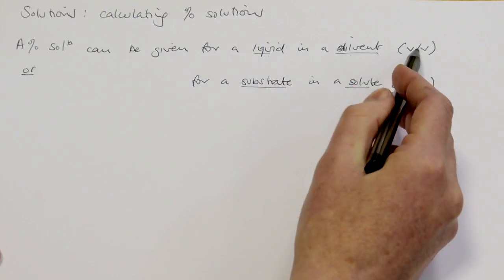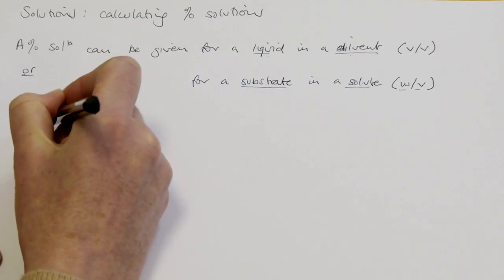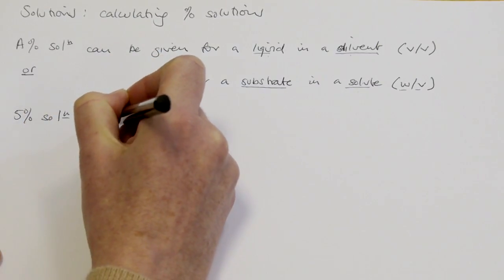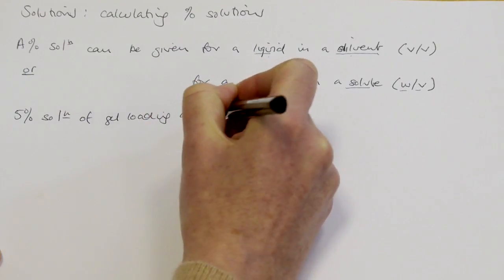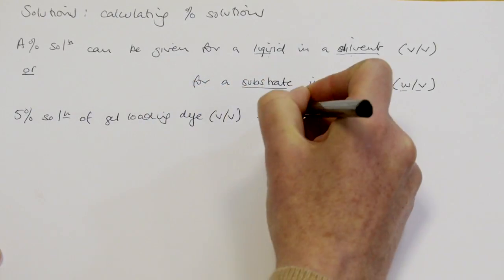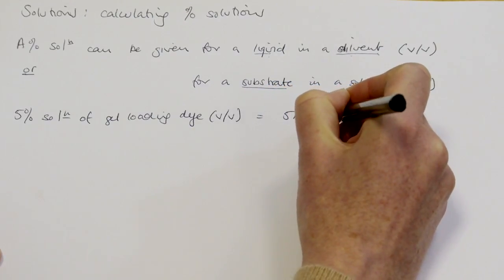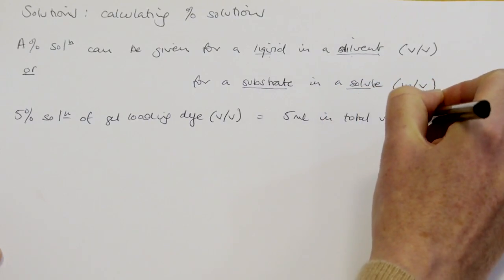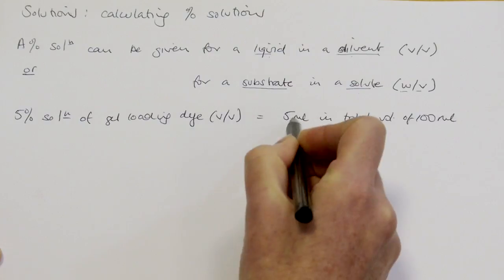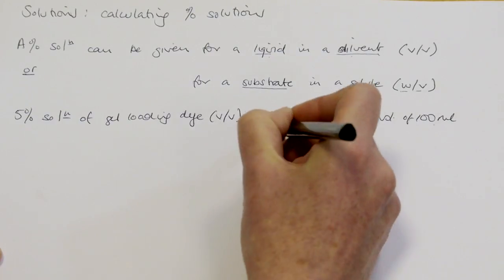For a liquid in a diluent — volume per volume — say for example I wanted a 5% solution of gel loading dye. That is five mils in a total volume of a hundred mils. That's why it's a percentage: five mils in a hundred. The volume doesn't really matter as long as the percentage stays the same.